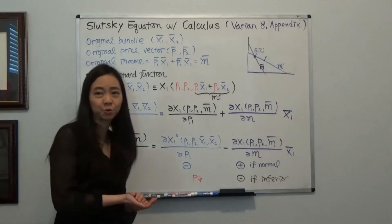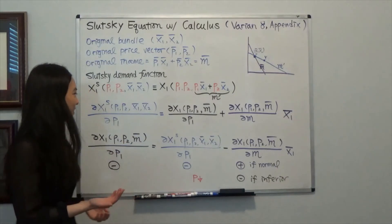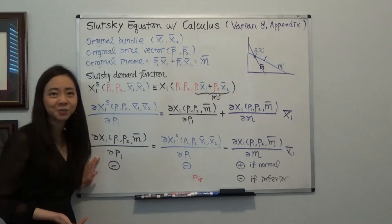So that's when the good is the normal good, when the substitution effect and income effect, they're going to go in the same direction. So I hope this helps, and I'll see you next time.